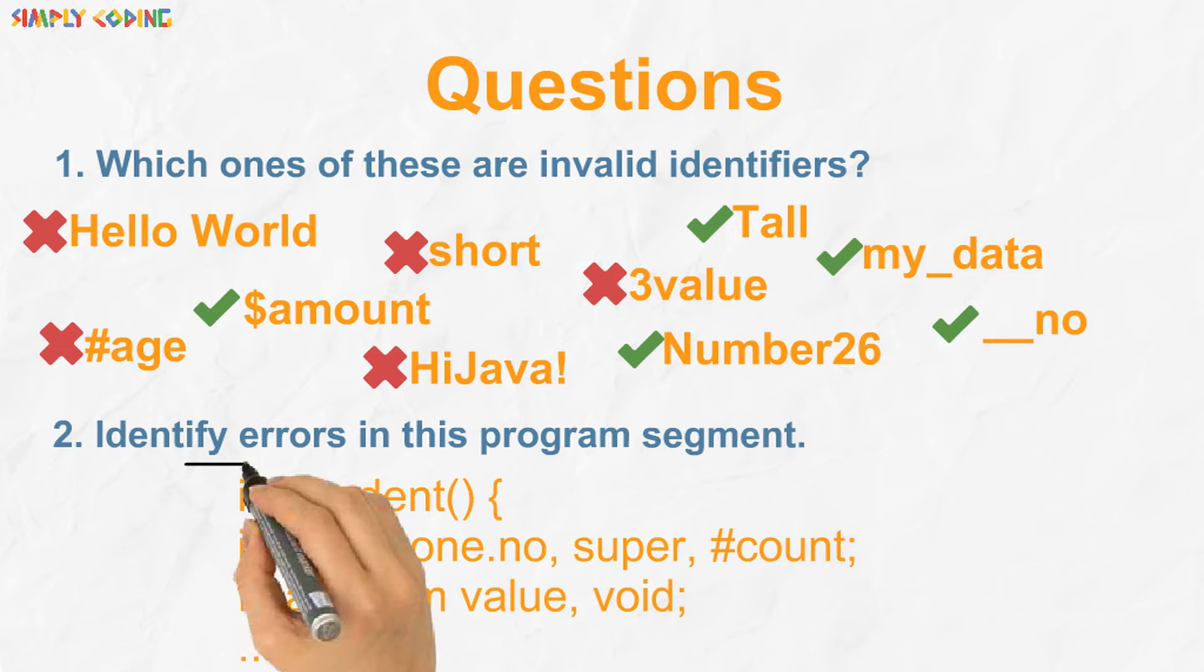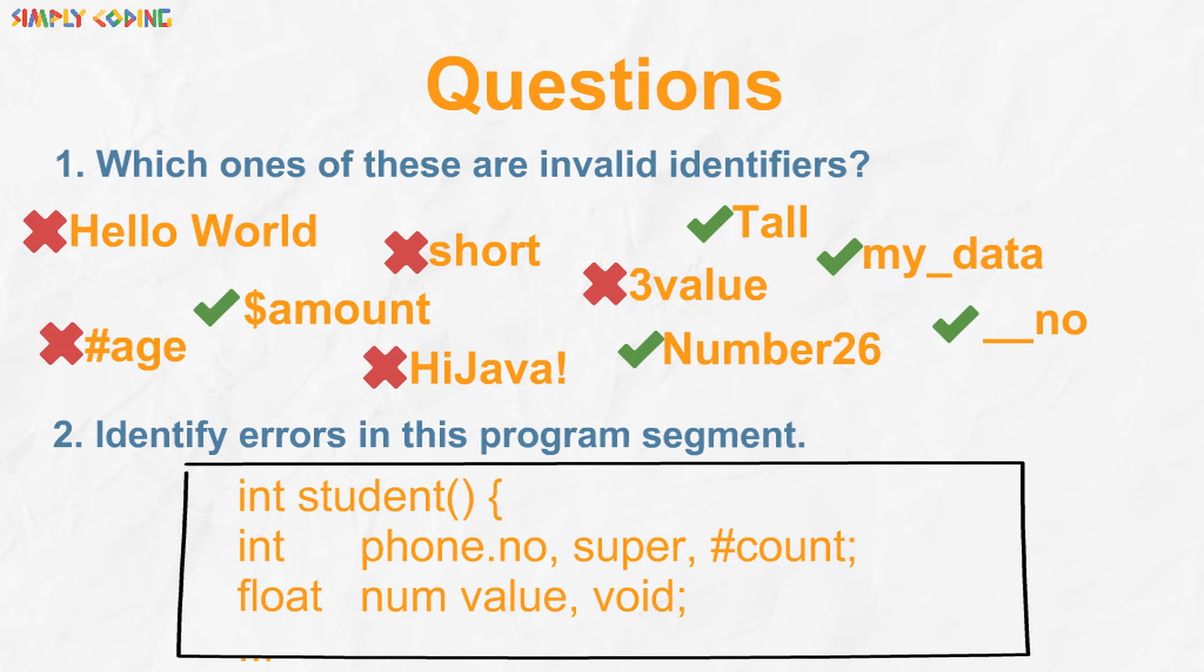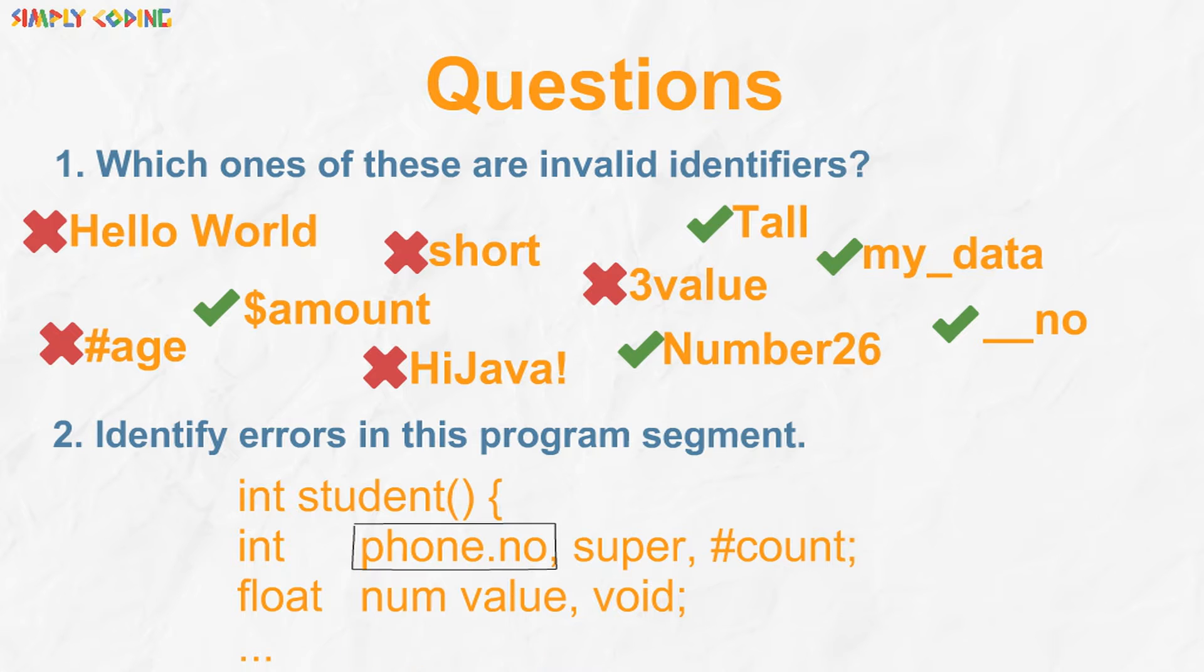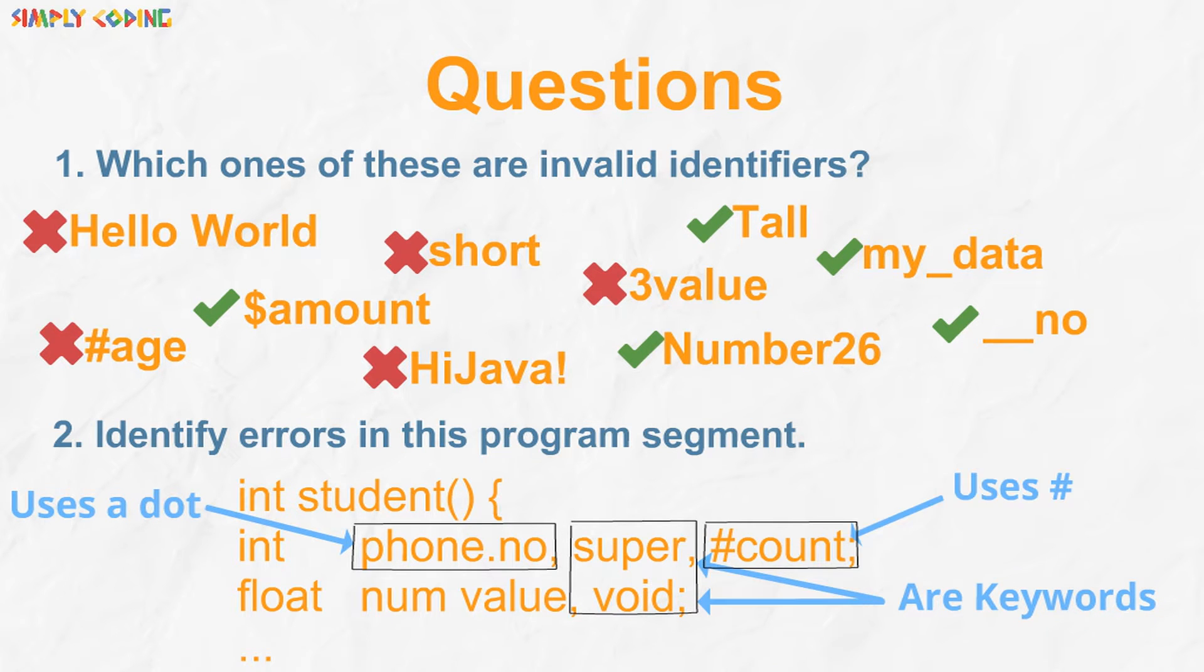Similarly we will take this program and we will correct the variable name which are incorrect. In the program segment phone number is invalid as it is using a dot. Super and void are keywords. Hash count is also invalid as identifier name cannot start with hash. Num value cannot have space in between.